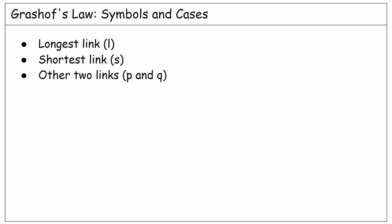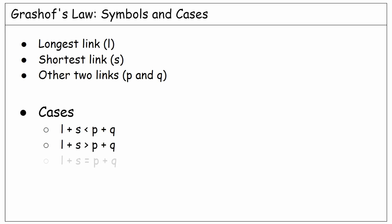Generally, we have three broad cases by comparing the summation of the lengths of the longest and the shortest links with that of the two other links. We consider if L plus S is less than P plus Q, then if greater than, and finally if they are equal.